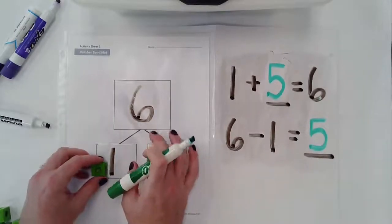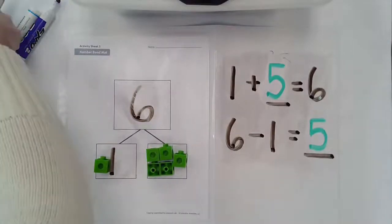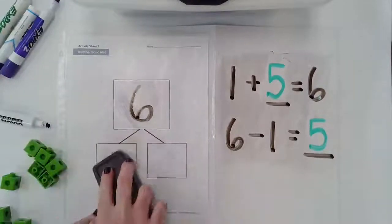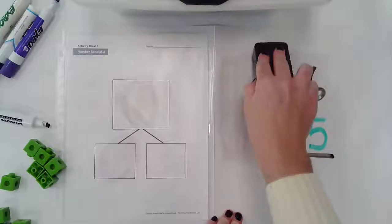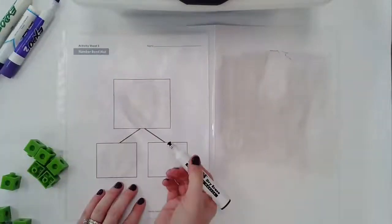We also know that one and five are number partners of six. So don't forget those important number partners. We're going to try one more. Again, we're going to use a different total and different addends here.